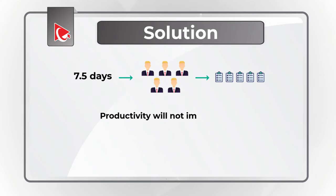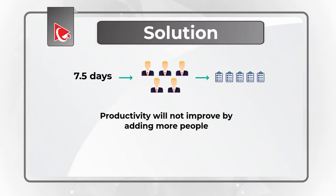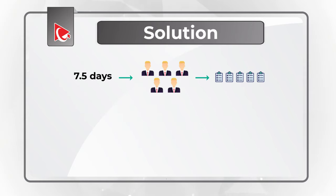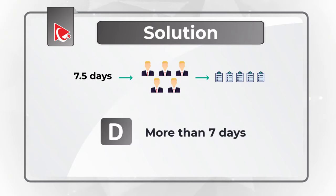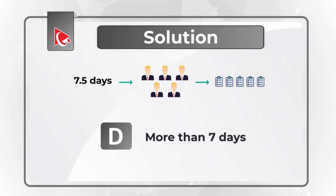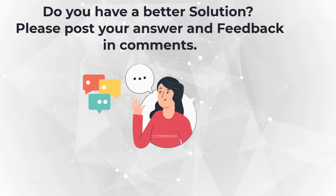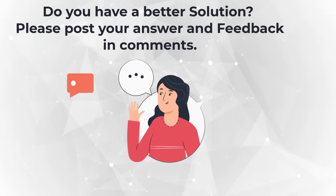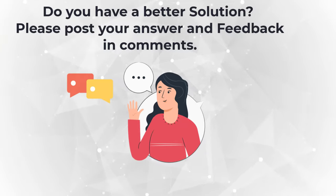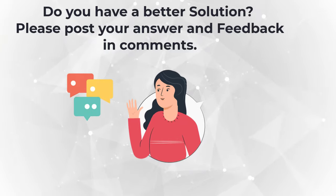Productivity will not improve by adding more people. So the correct choice here is Choice D — it will take more than 7 days to complete these 5 tasks. Hopefully you've nailed this question and now know how to answer similar problems on the test.